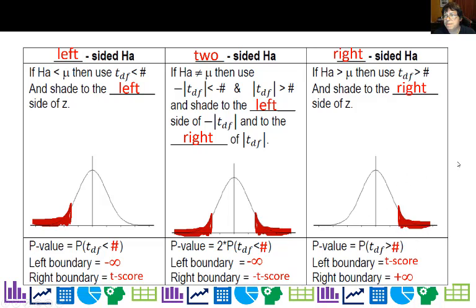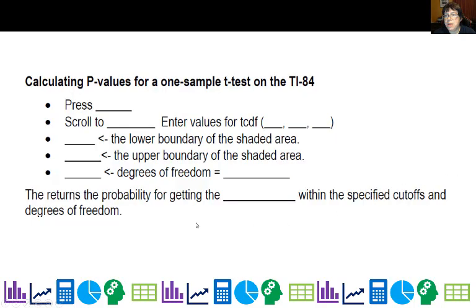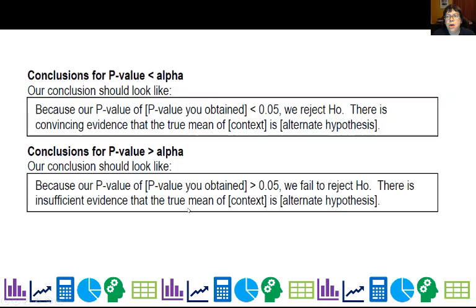So calculating p-values, we'll do second distribution, and then we'll scroll to tcdf on the calculator, and then you enter your lower, your right, your left, your right, and your degrees of freedom. So t-left is a lower boundary of the shaded area, t-right is the upper boundary of the shaded area, and df is your degrees of freedom, which is n minus one. And this will give you the probability for getting the statistic within the specified cutoffs and degrees of freedom.